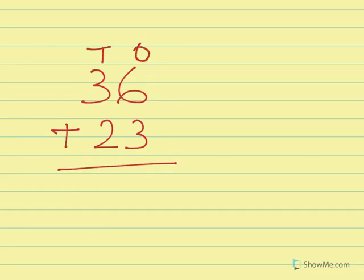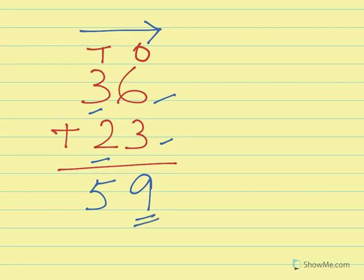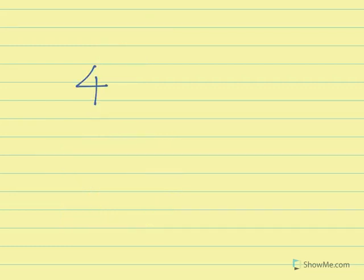Next example: 36 plus 23. In the 10s position we have 3 and 2, so 3 plus 2 adds into 5. In the 1s position we have 6 and 3. Now 6 plus 3 adds into 9, and as it is a single-digit number, it's a non-carrying number. So our final answer is 59.